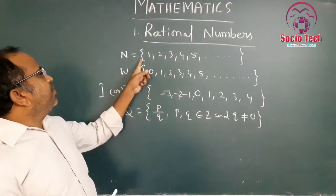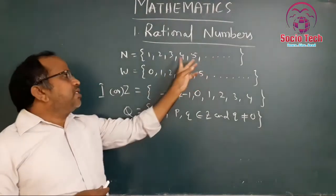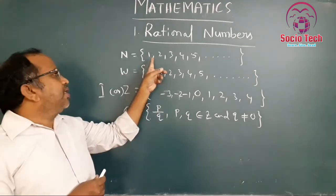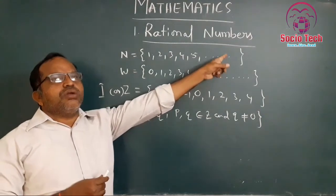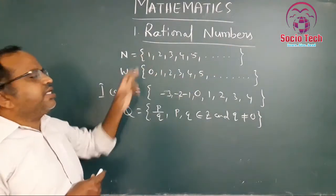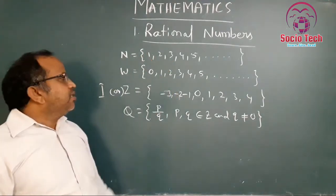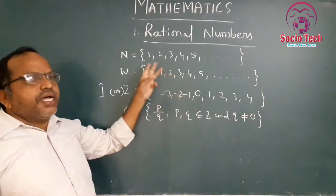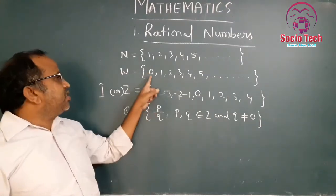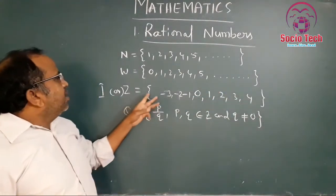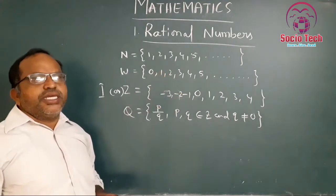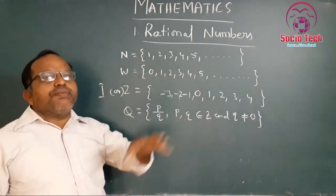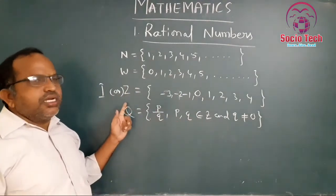The numbers beginning with 1, 2, 3, 4, 5 and so on are called natural numbers, denoted by N. The least natural number is 1 and there is no largest natural number. Adding 0 to the natural number set gives the whole number set — beginning with 0, 1, 2, 3, 4, 5 — denoted by W. The least whole number is 0. Adding negative numbers gives integers, denoted by Z or I, with no largest or smallest value.